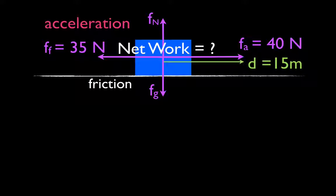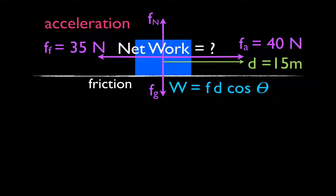We're going to start by calculating the work done by each force: Fd cosine theta — force times distance times the cosine of theta. It's important that you understand what theta is. Theta is the angle between the displacement and the force for each case.